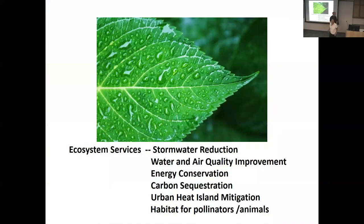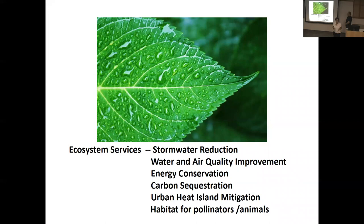Ecosystem services, or ecosystem benefits — we rely on a landscape to provide many of these. They relate to stormwater reduction, air and water quality improvement, energy conservation, carbon sequestration, keeping carbon in the plants, urban heat island mitigation, and habitat for pollinators and animals. We're going to specifically look at the stormwater reduction aspect of ecosystem services, but they do have other aspects in terms of some of these other services.